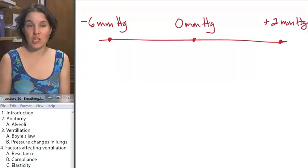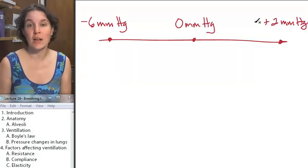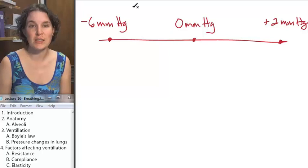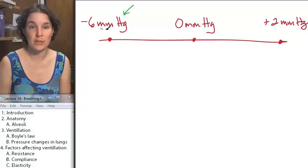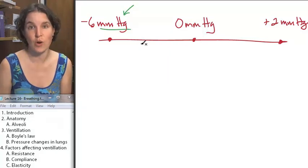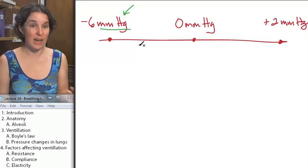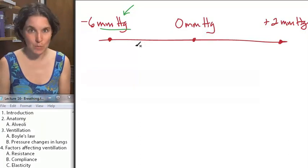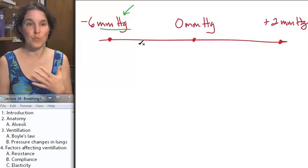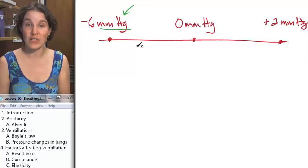In our conversation, we're going to consistently use the units millimeters of mercury to describe pressures. We did that with blood pressure. We're going to keep the same units for breathing and the pressures involved in ventilation.